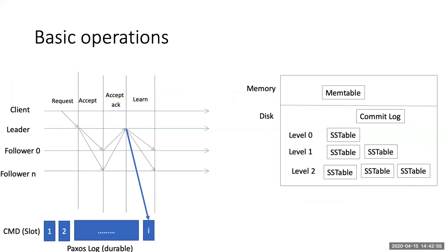Usually there would be three replicas. The basic operation uses Multi-Paxos: the client issues a request — either read or compare-and-swap — to the leader. The leader sends prepare and accept messages to followers, followers acknowledge the accept, and if the majority responds, the leader commits to the log for durability and sends the information to followers. The LSM table is divided into memory for fast access and disk for durability, but the commit log is redundant because Paxos can implement this log.